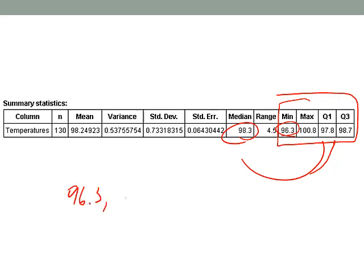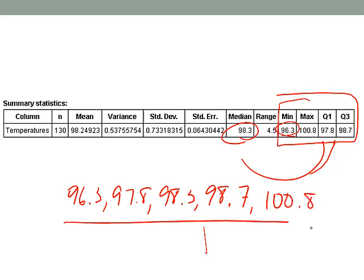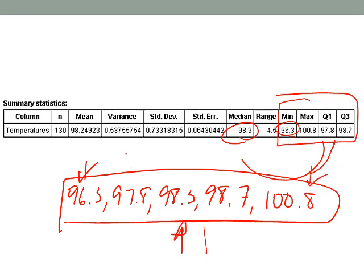So it's 96.3, comma, Q1 97.8, comma, the median which is 98.3, and then Q3 which is 98.7, comma, the max 100.8. And the numbers are just written in order, right? There's your minimum value there, maximum at the end. And then your median's in the middle, and there's your Q1, and 98.7 is your Q3.